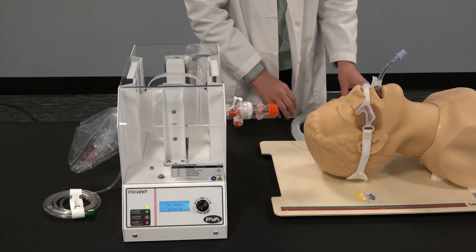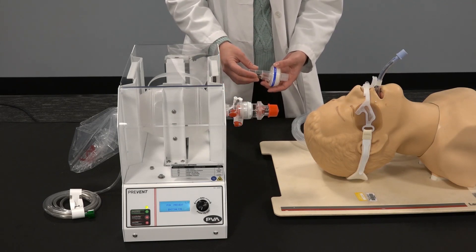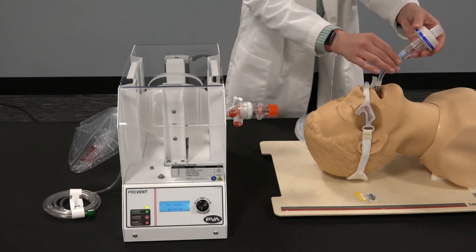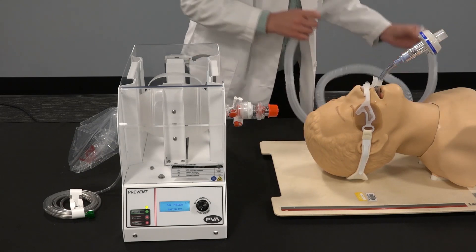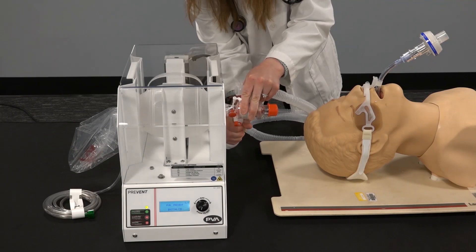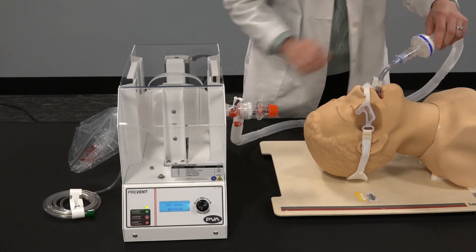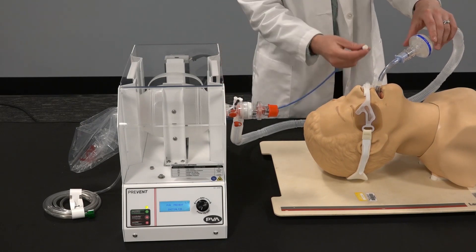In this tutorial we are using 10. Next, attach the heat moisture filter and the adapter to the end of the endotracheal tube tubing. And last, the pressure sensor.